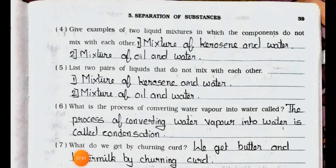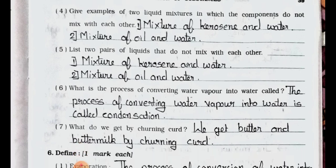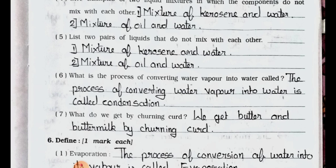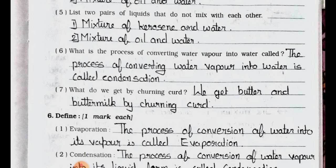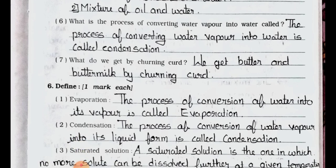Number four: Give examples of two liquid mixtures in which the components do not mix with each other. Answer: (1) Mixture of kerosene and water, (2) Mixture of oil and water. Number five: List two pairs of liquids that do not mix with each other. Answer: (1) Kerosene and water, (2) Oil and water. Number six: What is the process of converting water vapour into water called? Answer: Condensation.